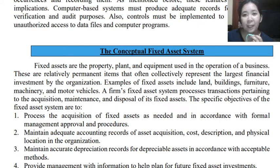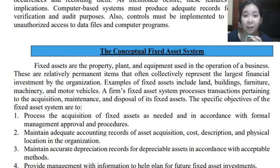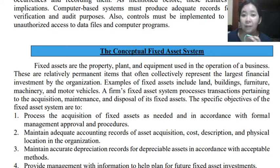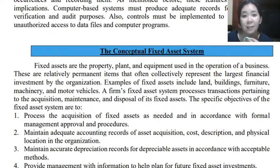We are now in the concept of the fixed assets system. Fixed assets are examples such as property, plant, and equipment, which are used in the operation of a business. They are permanent items that often collectively represent the largest financial investment by the organization, because fixed assets require a huge amount of investment.